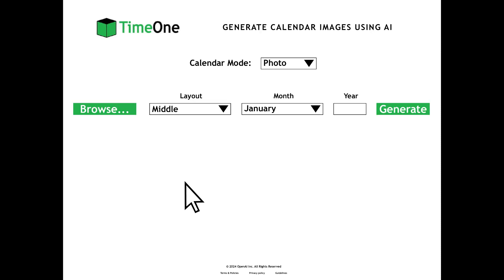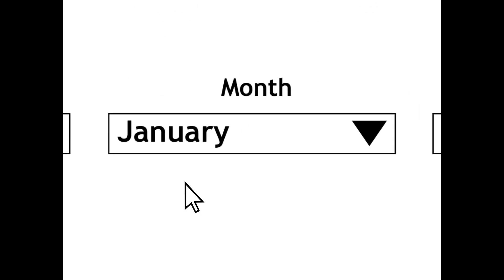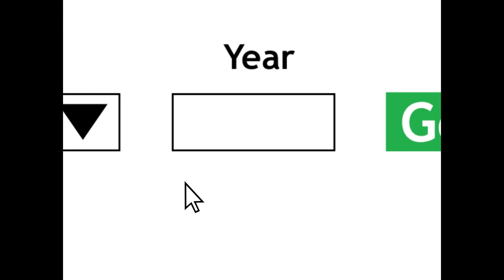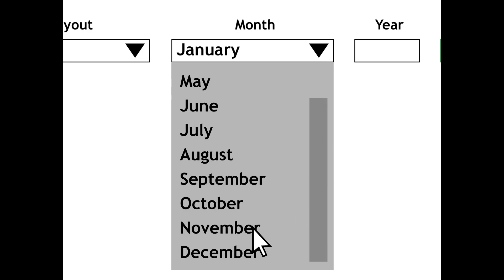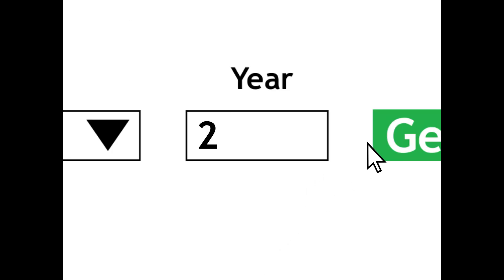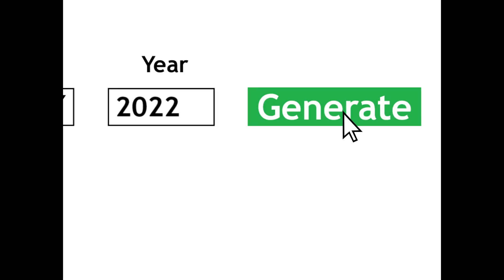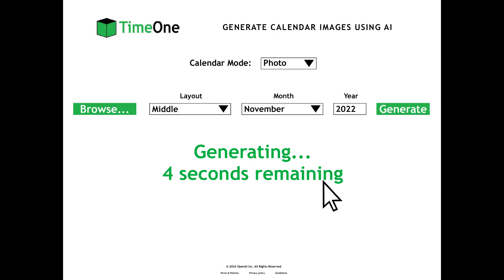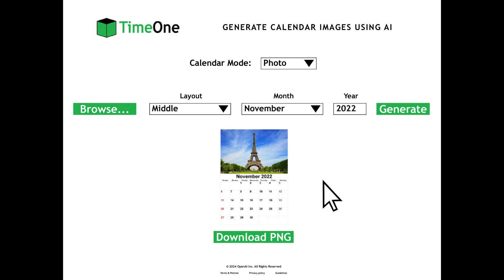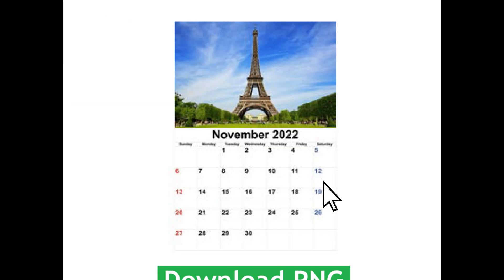After you browse your picture and choose the layout for your photo calendar, you will then choose the month from the month drop-down list and enter the year in the year search field. For example, I choose November from the month drop-down list and enter 2022 in the year search field. Then you click on generate, which takes 5 seconds. And voila! Your calendar image is ready — showing November 2022.